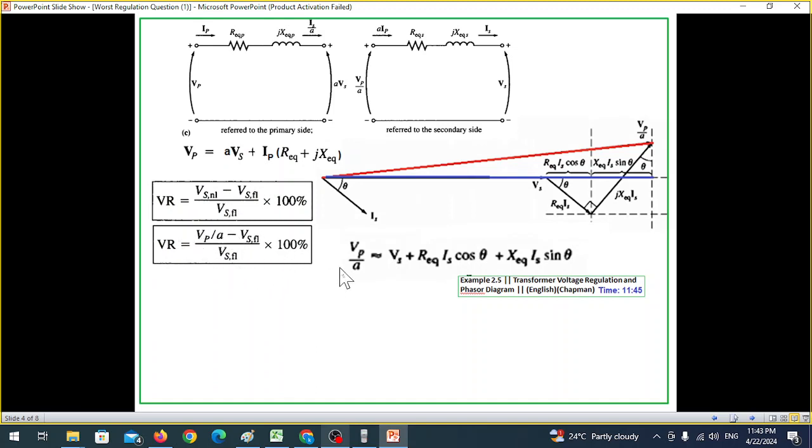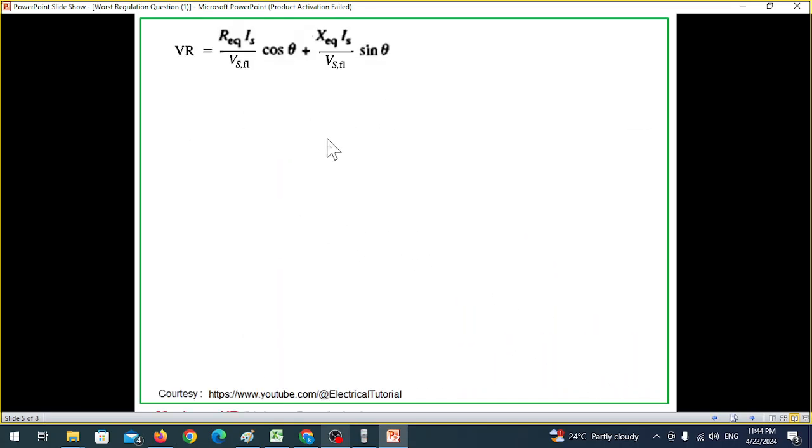We are using this for the secondary. So we'll manipulate this. VS will bring on the left hand side. So this is VP over A minus VS, and this is the numerator of the voltage regulation equation. So we can write the voltage equation with this numerator divided by VS. Now we need to find the worst case or maximum voltage regulation. To find maxima we would differentiate the function and equate it to zero.